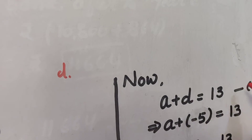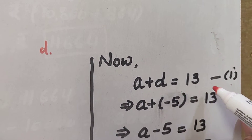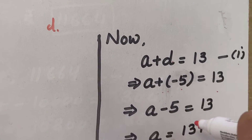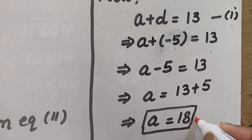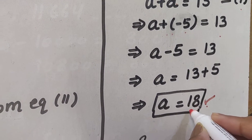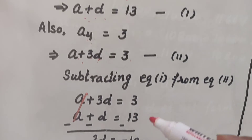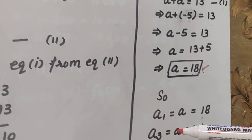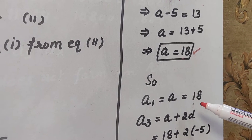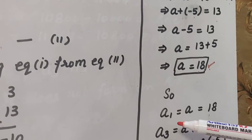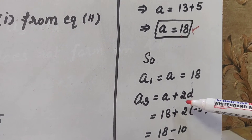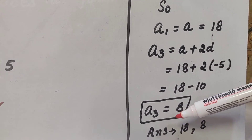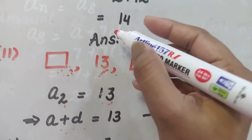Once we find 'd', we can find 'a' from equation 1: a + d = 13, so a + (−5) = 13, giving a = 18. Now with both 'a' and 'd' known, the missing first term a₁ = a = 18, and the missing third term a₃ = a + 2d = 18 + 2(−5) = 8. So the missing terms are 18 and 8.